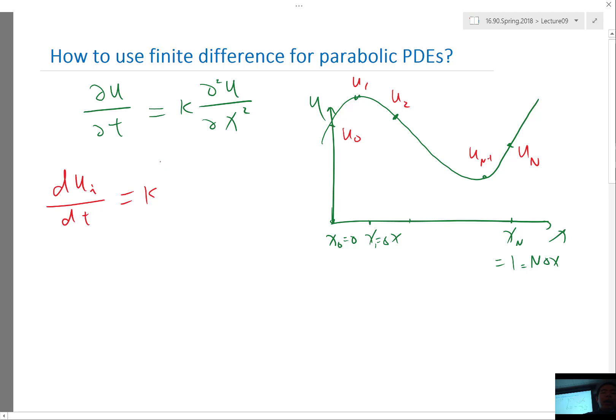Now the task is if I'm at a grid point how do I use the neighboring values to approximate the second order derivative? Any ideas?